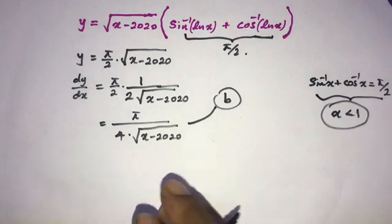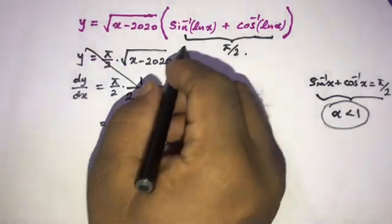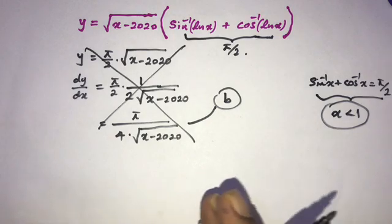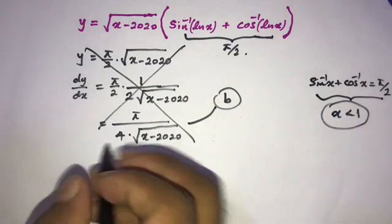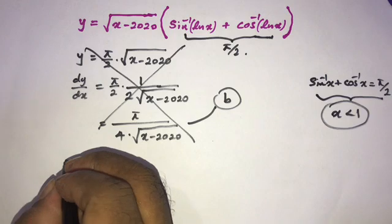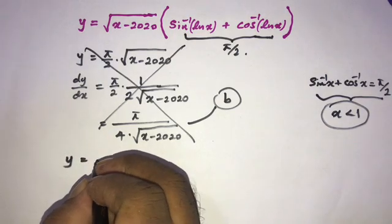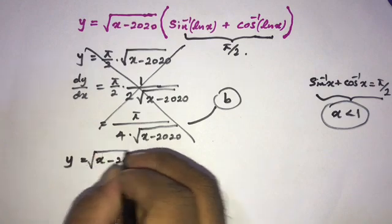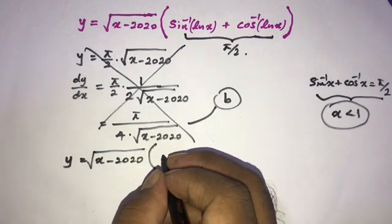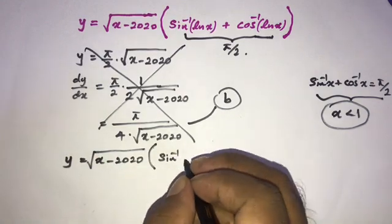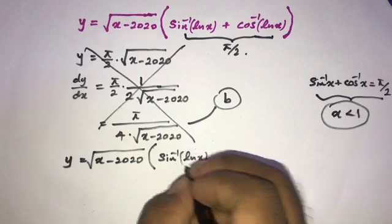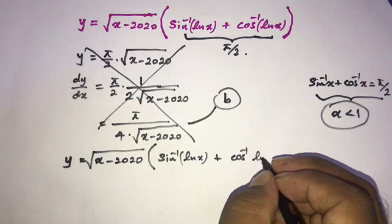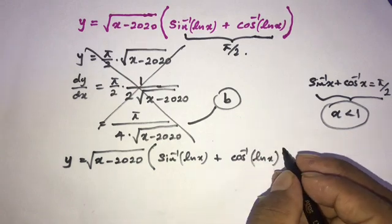but this is totally incorrect. So what's the reason? Okay, now let's go to the correct way. So y is equal to square root of x minus 2020 times inverse sine of natural log of x plus inverse cosine of natural log of x.